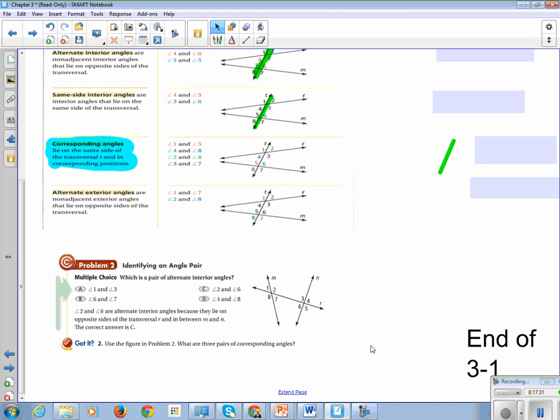So, the next thing we're going to do is some more identifying. Awesome! So, if you have a multiple choice question like this, and I'm assuming you will on your quiz that you're going to take for section 3-1, which is a pair of alternate interior angles? So, here's your transversal, is this R, and it crosses M and N, and alternate interior. So, we want to be on the inside, and we want to be on different, either the top and the bottom, or the bottom and the top. So, 1 and 3 are definitely not alternate interior, because 1 is exterior. 6 and 7, these are same side interior. 2 and 6, 2 and 6 is a yes. And 4 and 8 are exterior, so it is C.